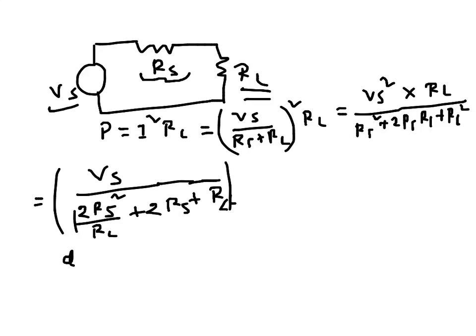So we just differentiate this part with respect to RL which is the variable: 2 RS over RL plus 2 RS plus RL.